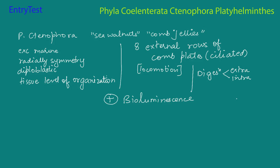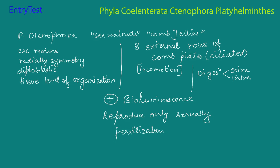Sexes are not separate, so ctenophores are basically hermaphrodites. Reproduction is only by sexual means. Fertilization is external, and development is indirect — not direct.